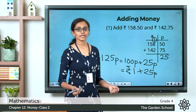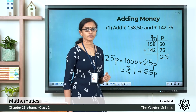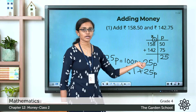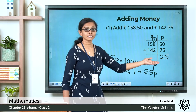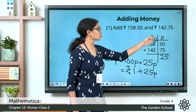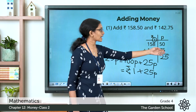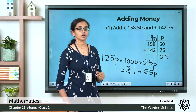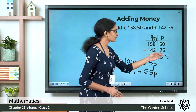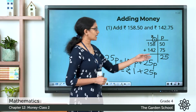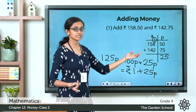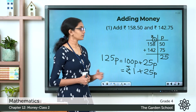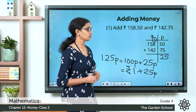In usual addition, when you add 5 plus 7 you get 12 — you write 2 and carry over 1 to the next place. It's just like that here, but when you carry over 1 to the rupee column, you are actually carrying over 1 rupee or 100 paise. Just keep that in mind. So we write 25 here in the paise column and carry over 1 rupee to the rupee column.